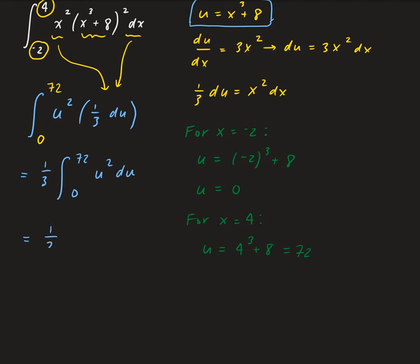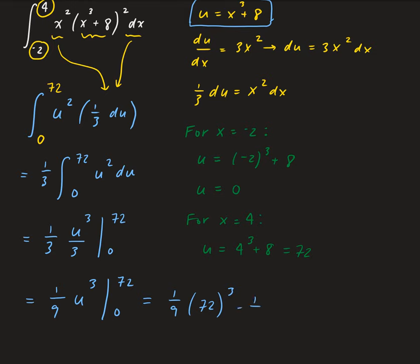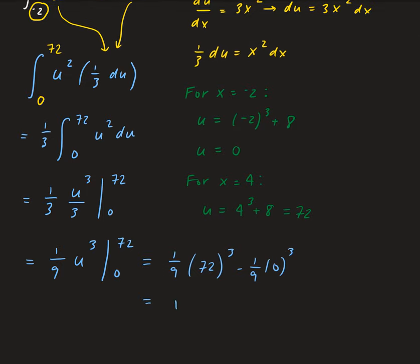Using the power rule for integration, we have 1/3 times u cubed over 3, evaluated from 0 to 72. We don't need to convert back in terms of x because we've already converted the limits of integration into terms of u. So we have 1/9 times u cubed evaluated from 0 to 72. This gives us 1/9 times 72 to the power 3 minus 1/9 times 0 to the power 3, and we end up getting 41,472.